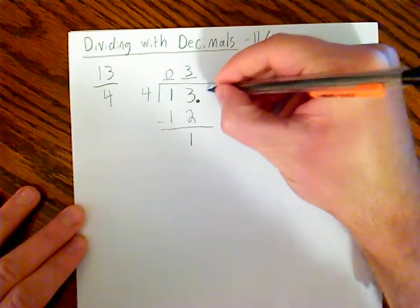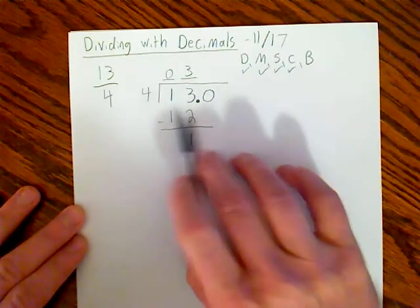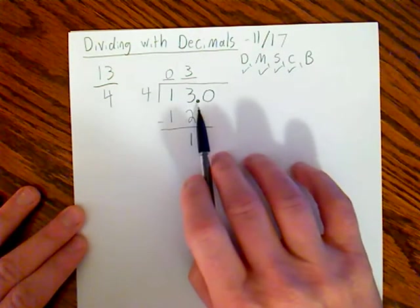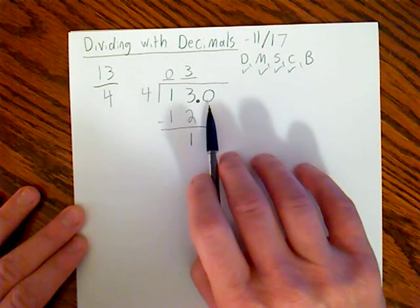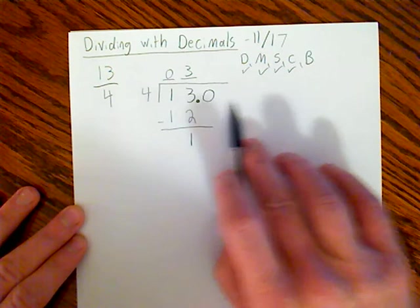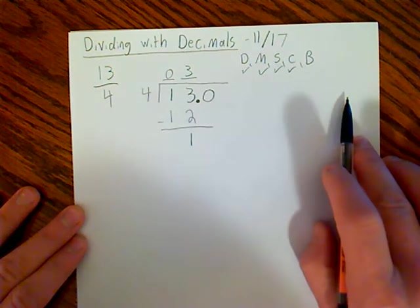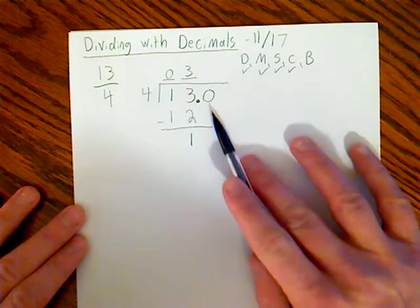So when you get down to this point, I'm going to add a decimal point and I'm going to add a zero. I haven't changed this 13 at all. I've just added some zeros to it, which is going to help me divide. I could add zeros forever and ever to the end of this number and it's not going to change the value.